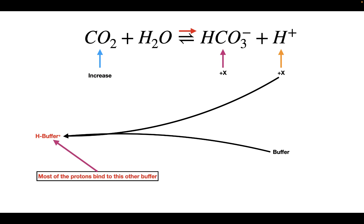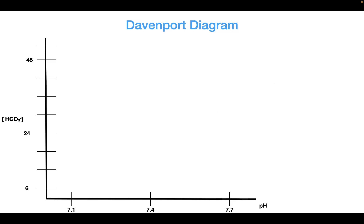So most of the protons are going to bind to this other buffer, and the major buffer other than the bicarbonate buffer is going to be hemoglobin. Now we're going to talk about the Davenport diagram, because the Davenport diagram takes into account these other buffers when calculating the pH of a solution.